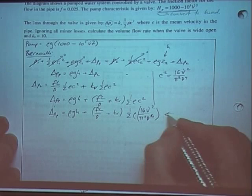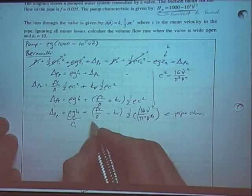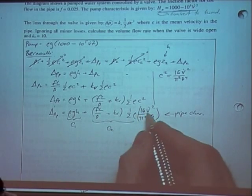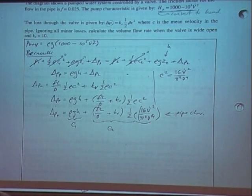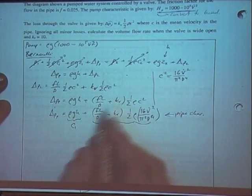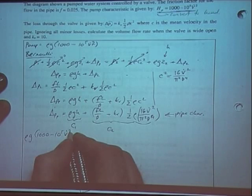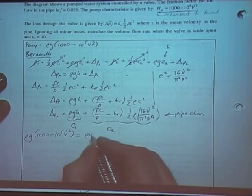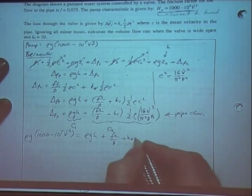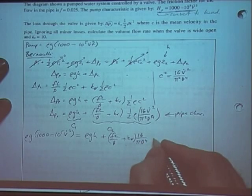This is our pipe characteristic. We take the pump characteristic and set it equal to the pipe characteristic: rho g times (1,000 minus 10 to the 5 V-dot squared) equals rho g H plus (fL/D plus KV) times 16 over pi squared D to the 4, multiplied by V-dot squared.